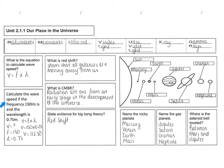Calculate the wave speed if the frequency is 150 hertz and the wavelength is 0.75 meters. So, we don't know the wave speed. You know the frequency is 150. You know the wavelength is 0.75. The equation is here, wave speed equals frequency times wavelength. So, the wave speed is 150 times 0.75. It gives us a wave speed of 112.5.